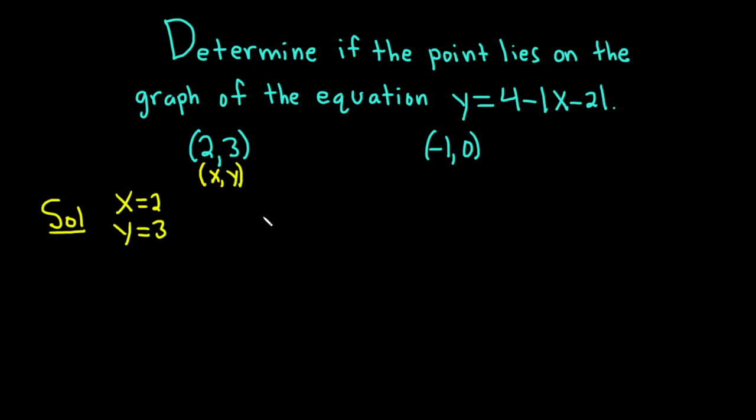Now we just have to plug everything into our equation. I'm going to write the equation again here so you see it. So that's y equals 4 minus the absolute value of x minus 2. Now we just carefully plug in the numbers. y is 3, and this is equal to 4 minus the absolute value. x is 2 so this is 2 minus 2.